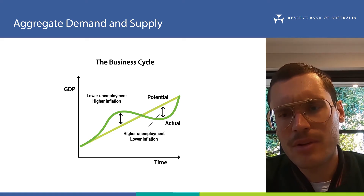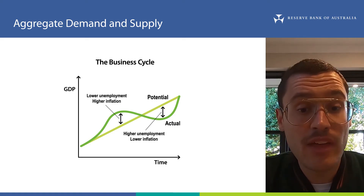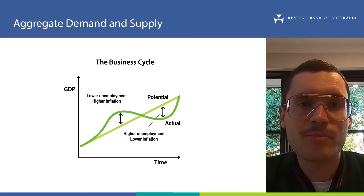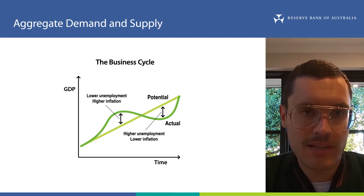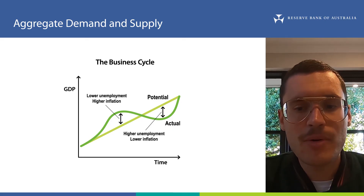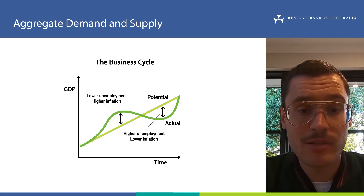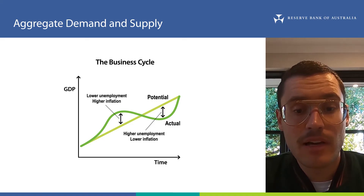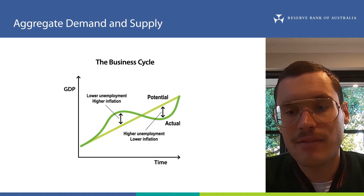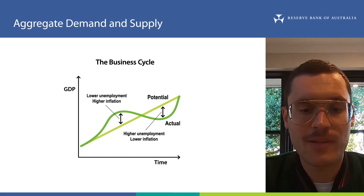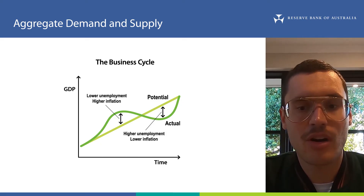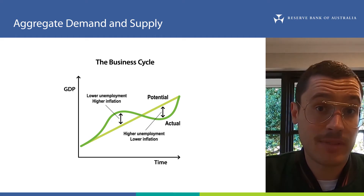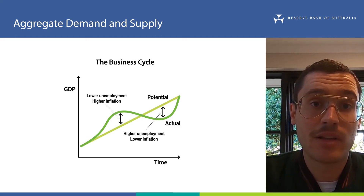The job of the RBA with monetary policy is to help smooth out this cycle so that growth in actual GDP is as close as possible to growth in potential GDP. When actual GDP is close to potential GDP, inflation is low, positive and stable — consistent with the RBA's inflation target of two to three percent per year on average over time. Having the economy grow close to potential is also a goal of fiscal policy.